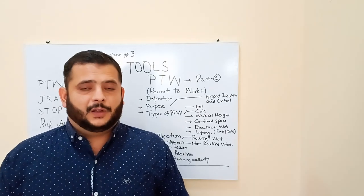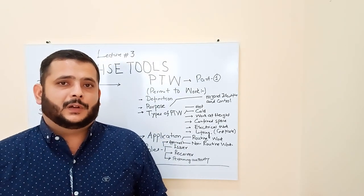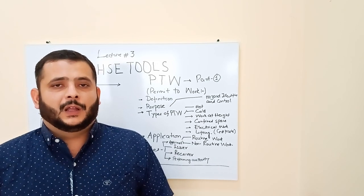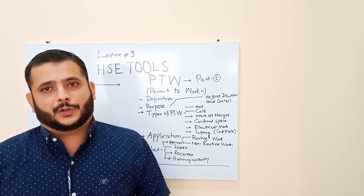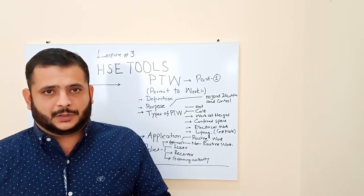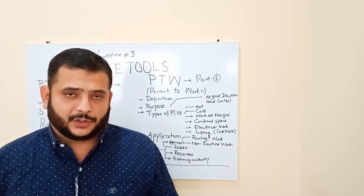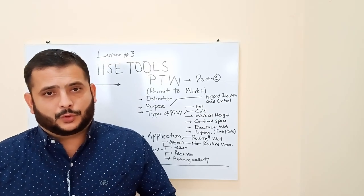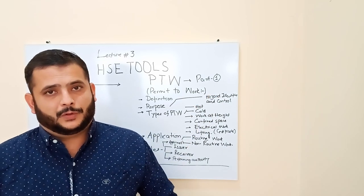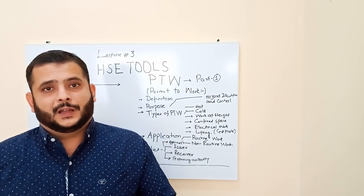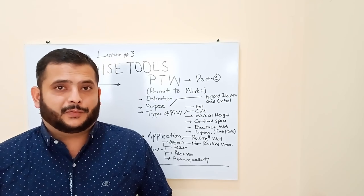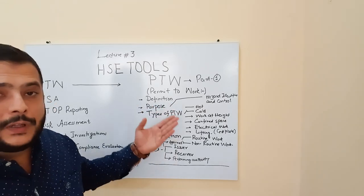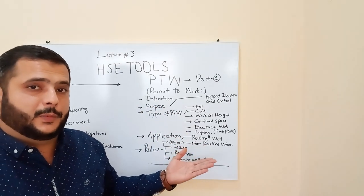The purpose of the Permit to Work system is that it will channelize your operation. It helps judge the consequences of hazards which can occur in your job. When you go through all the checklists in the PTW formats, you can easily rectify things if something is missing in your operational activities. The purpose is to control hazards inside the workplace area.